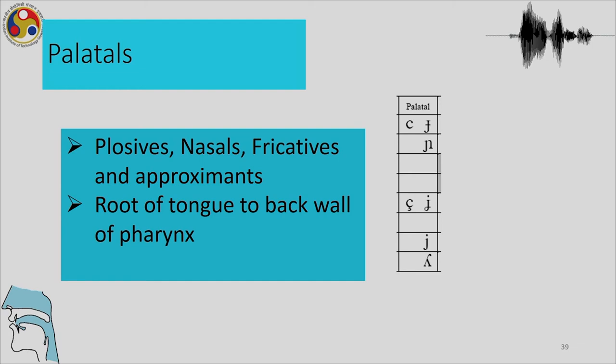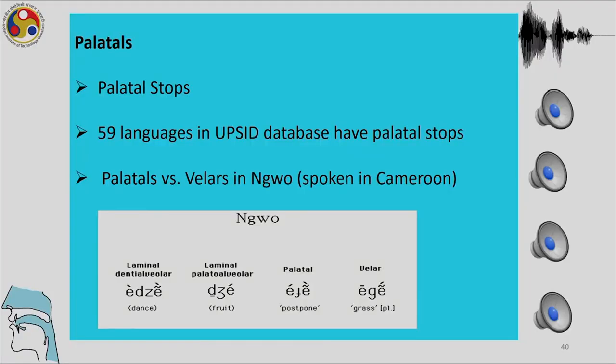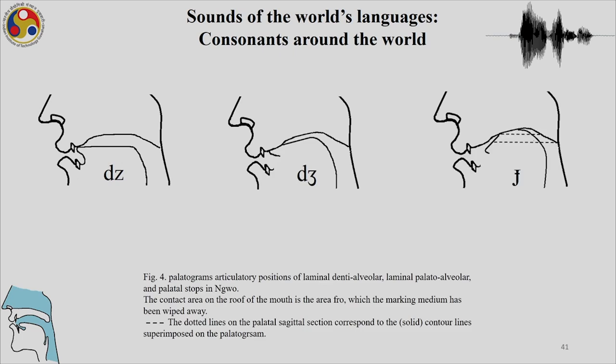How is a palatal sound produced? The root of the tongue makes a constriction and goes to the back wall of the pharynx — so the target is the back wall of the pharynx. Among 317 languages surveyed, 59 were found to have palatal stops. The palatograms show the articulatory positions of laminal denti-alveolar, laminal palato-alveolar, and then the palatal stop, which involves the back of the tongue making a movement towards the roof of the mouth.